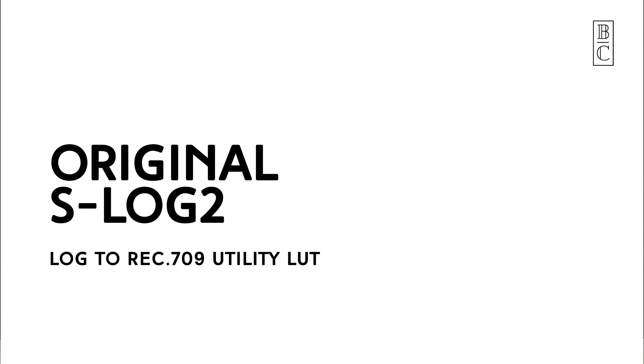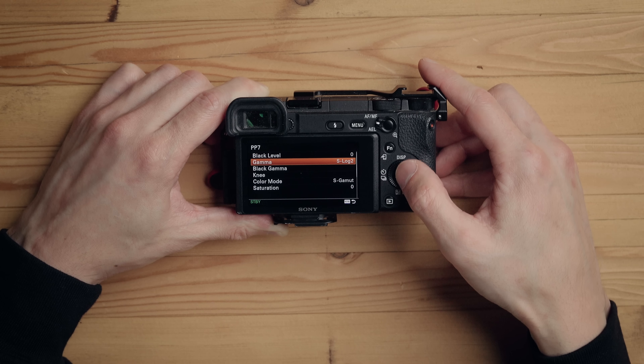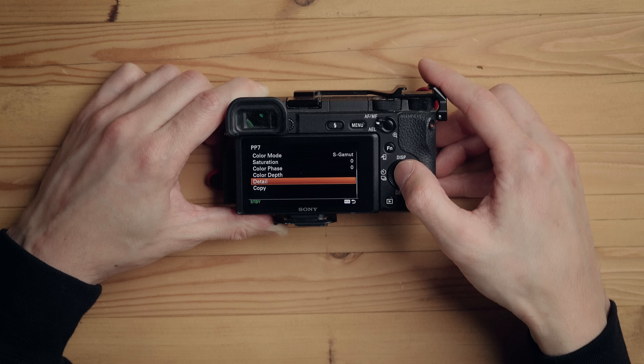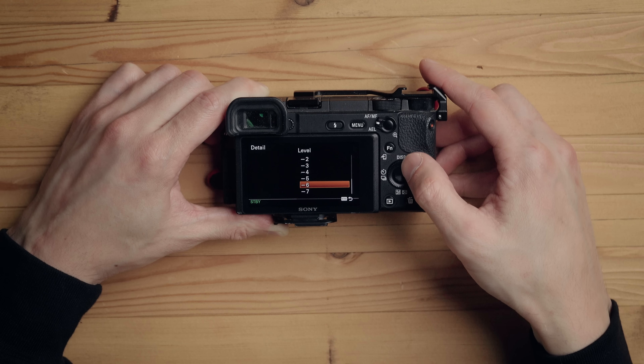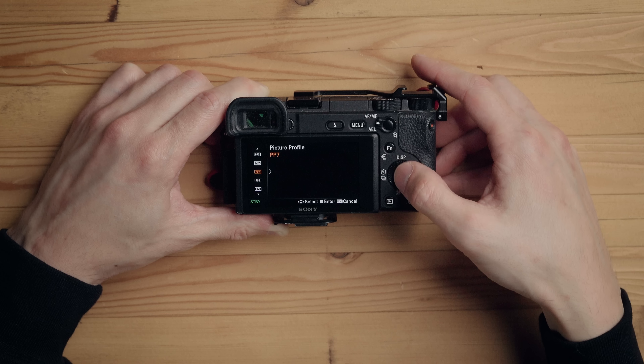Since we have cameras that fall in both categories, we've developed LUTs for both S-Log2 and S-Log3. We're using the A6400 here, but most Sony cameras have similar menus. Go into the menu settings, find the picture profile section, and choose PP7. This should automatically set the gamma to S-Log2, the color mode to S-gamut, and the saturation to zero. The only thing we choose to change in the profile is the detail level from the default minus seven to zero. I find leaving it at zero looks fine, and quite frankly it does a better job than I could do in post.